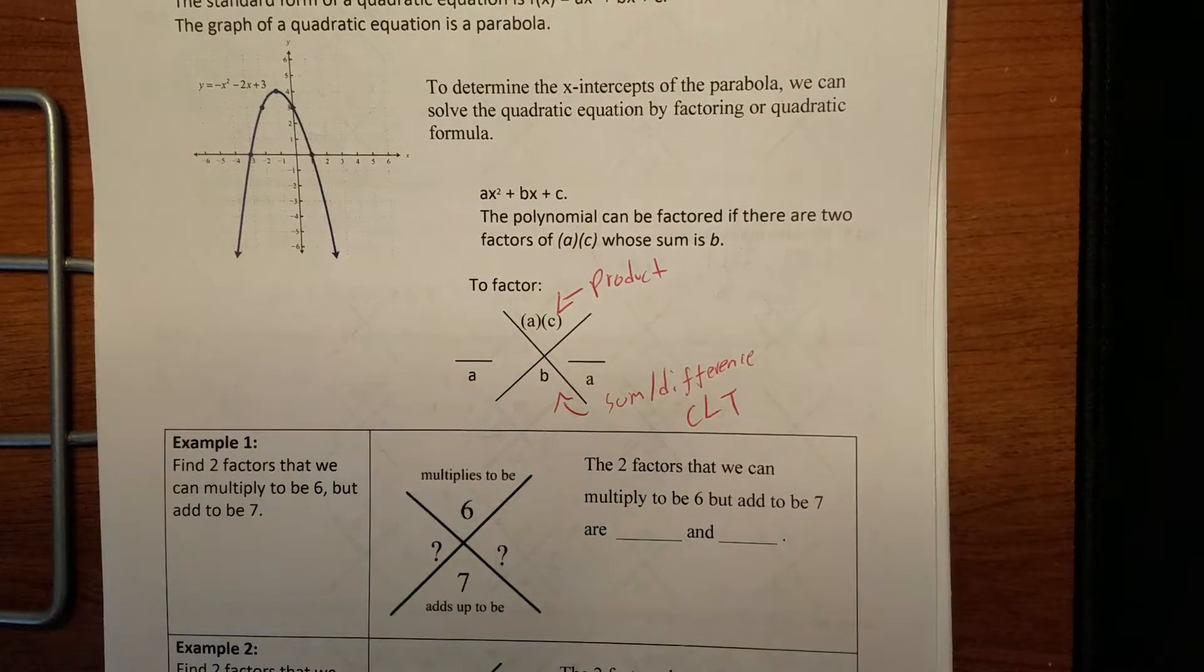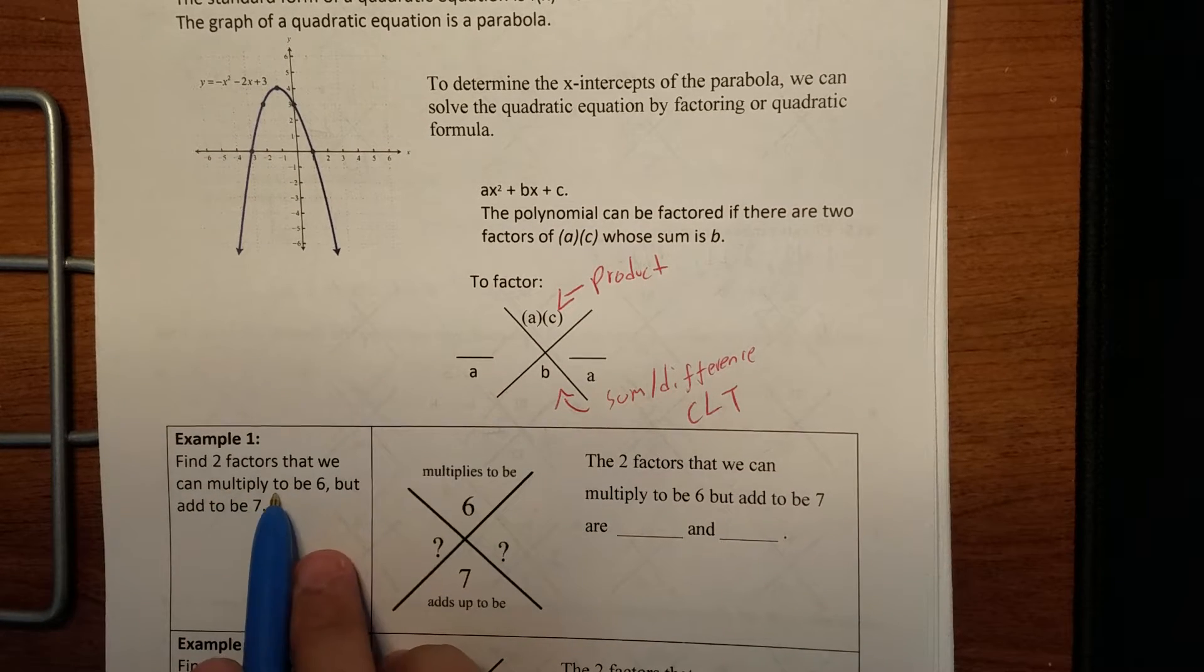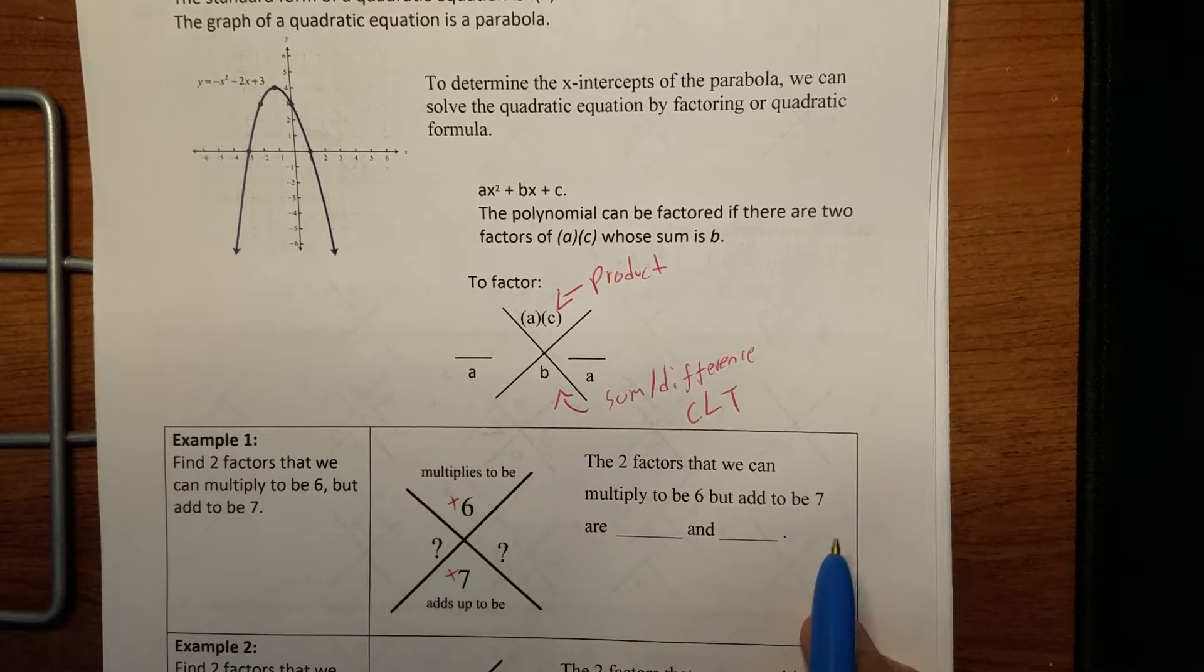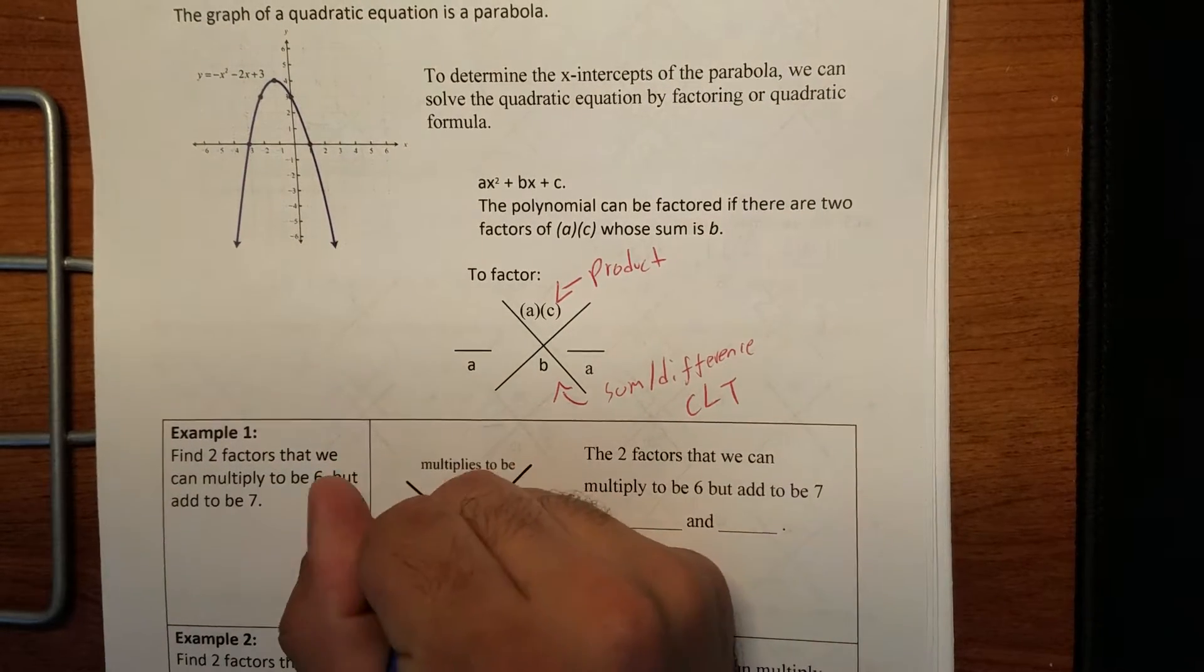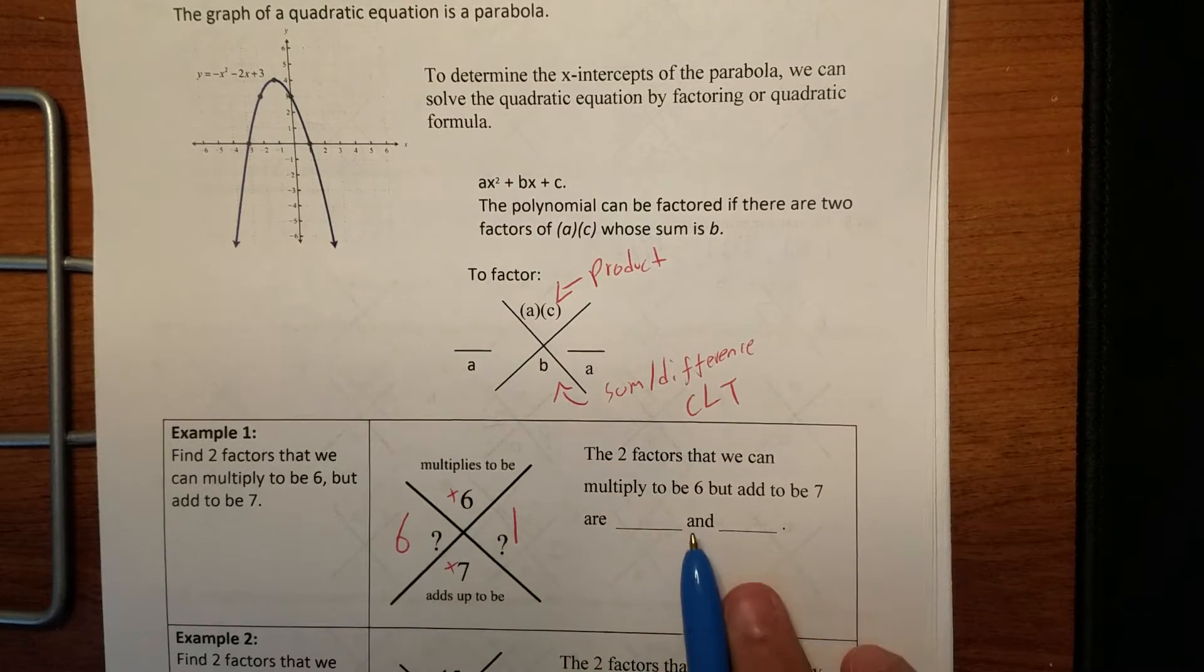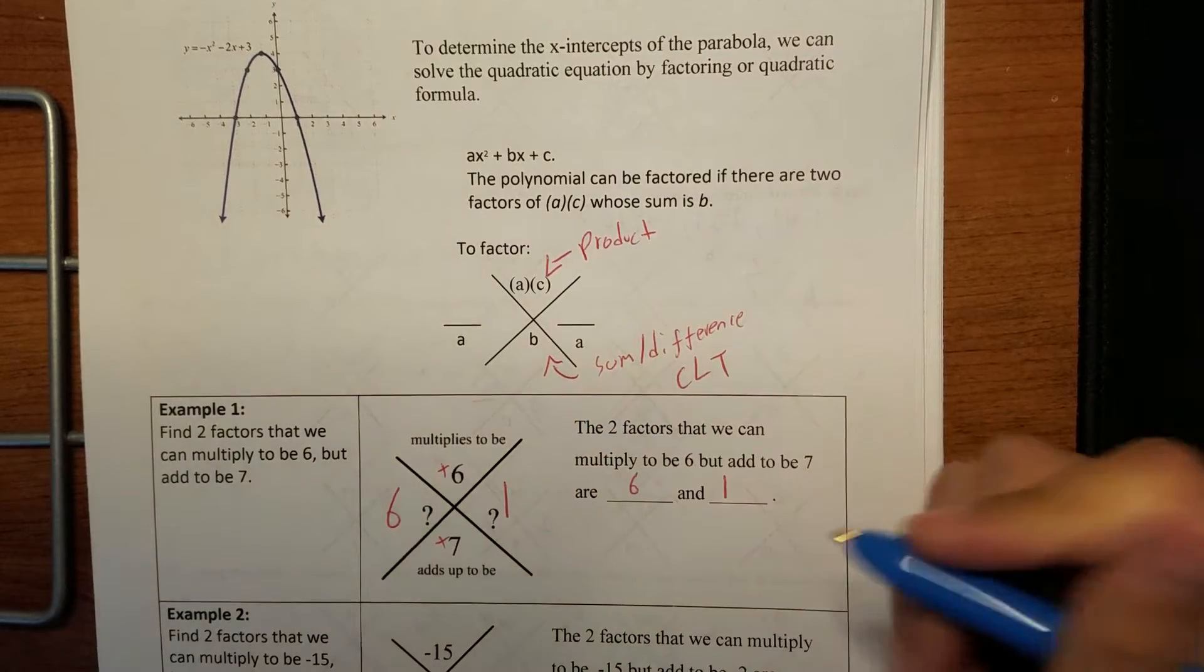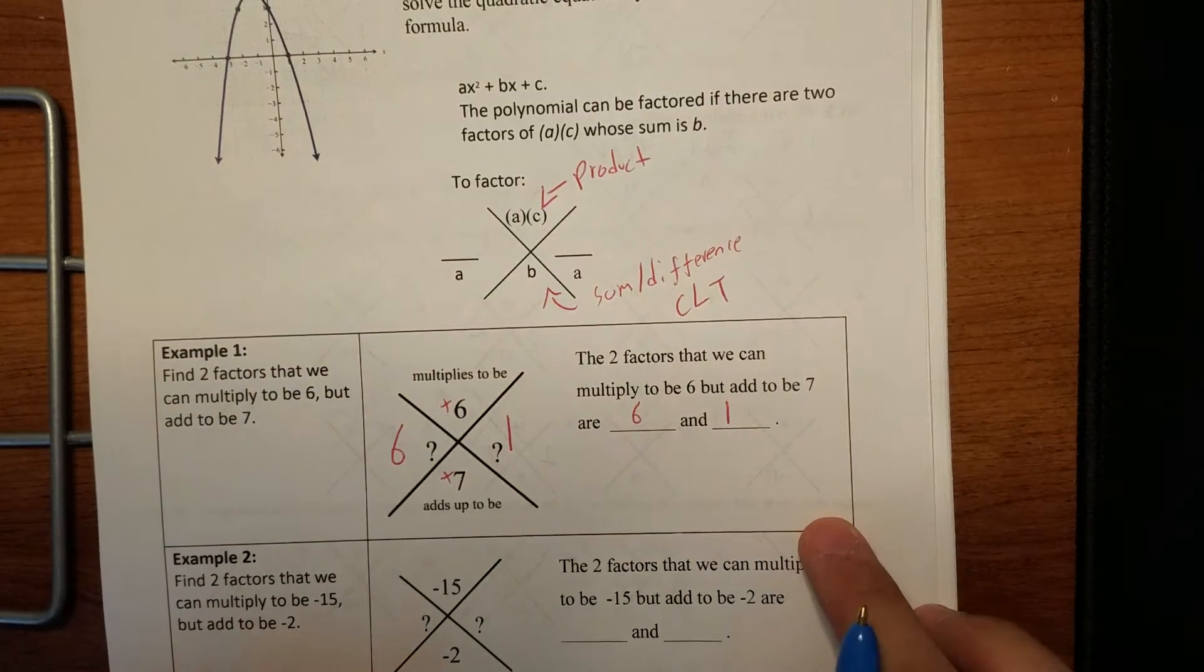Now, the way this is going to work out, it's basically the same thing we've done before. Find two factors that can multiply to six, six goes on top, but they add up to seven. Now, notice that they're both positives. So we know these two both have to be positive. The two numbers that we're actually looking for are six and one. Six times one is six, six plus one is seven. So the two factors that we are looking for are six and one. That's it.